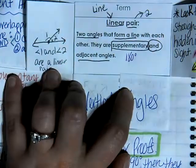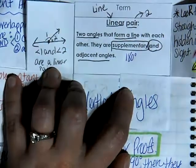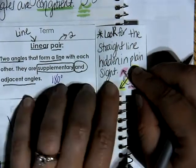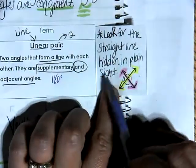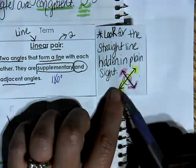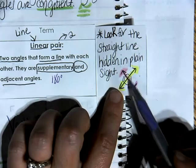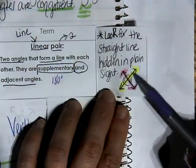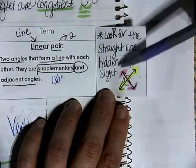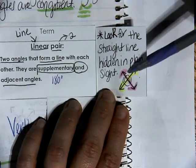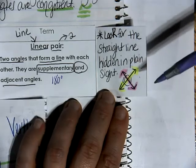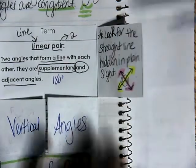So all linear pairs are going to add to equal 180 degrees because they are supplementary. For these types of problems, you always want to look for a straight line that's hidden in plain sight. So you might see a lot of intersecting lines, and wherever you see the line, that means that the two angles on each side are going to be linear pairs with each other.